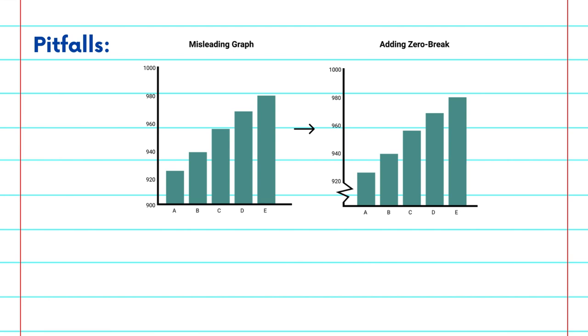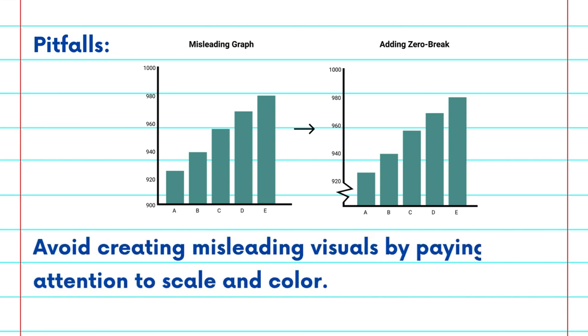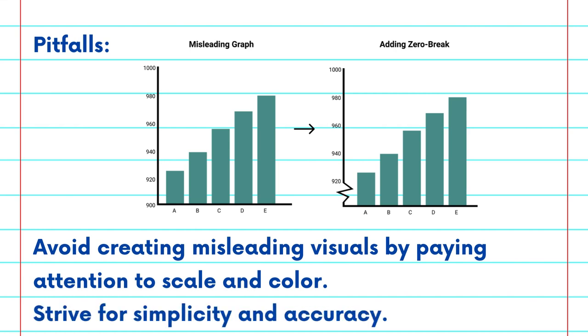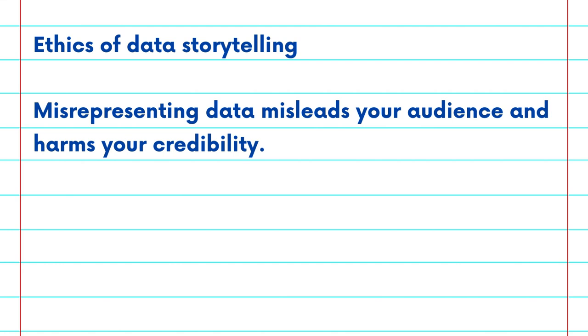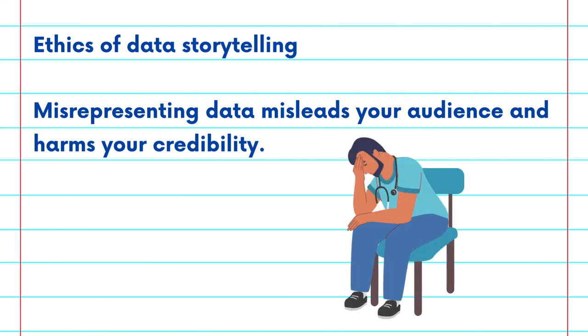Now for the pitfalls. The biggest mistake in data storytelling is using misleading visuals. Be aware of how visual elements like scale and color can distort the perception of data. Overcomplicating your visuals can lead to confusion rather than clarity. Always strive for simplicity and accuracy. Ethics plays a critical role — misrepresenting data not only misleads your audience, but also harms your credibility.